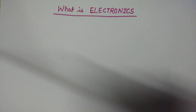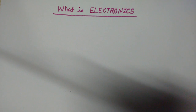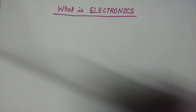So let's start with the definition of electronics. We can define electronics as: electronics is the science that deals with electrical devices and circuits that operate by controlling the flow of electrons or other electrically charged particles. This branch of science deals with how electrons behave.